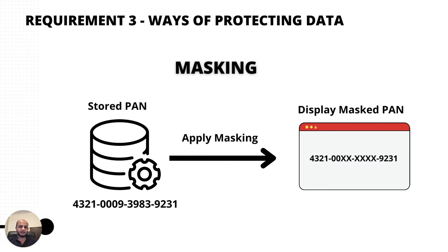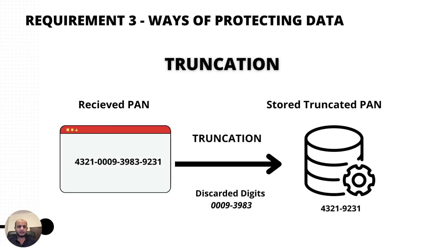Masking conceals certain digits during display, regardless of how the PAN is being stored. Masking should be the default — only enable full PAN display if somebody has a documented business requirement. If your system has the ability to mask data, just turn it on across the board after checking with the business.